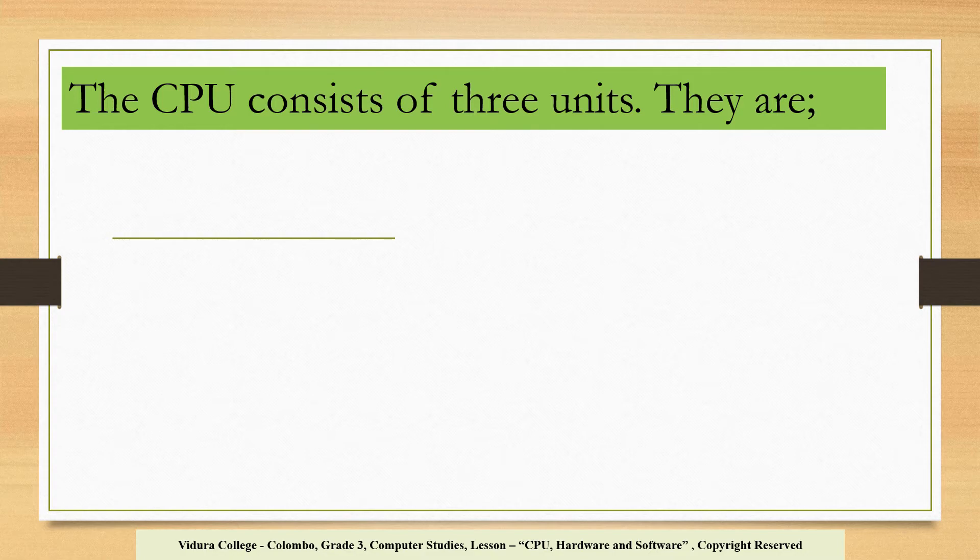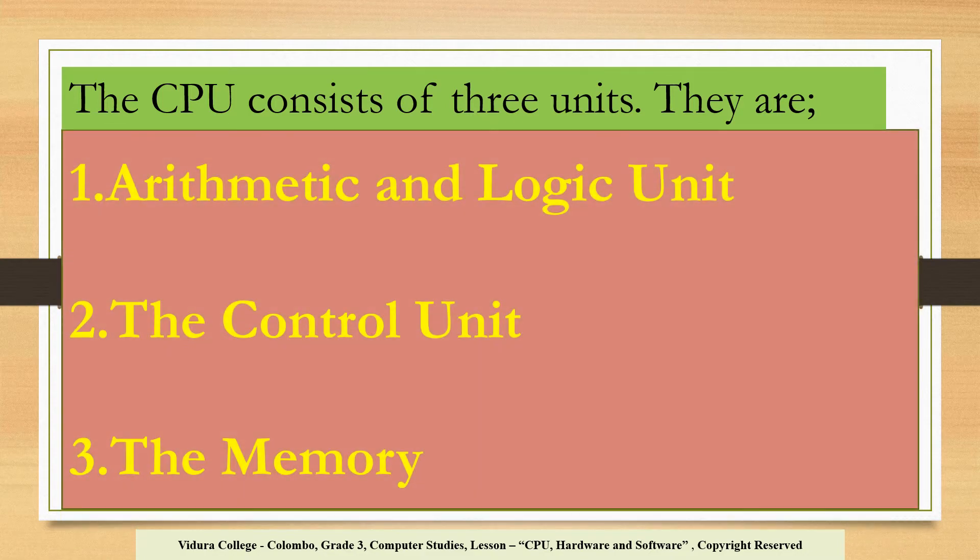Now, we are going to learn more about the CPU. Do you know, children, our brain is divided into many parts. These different parts do different functions in our brain. For example, one part of our brain helps us to do mathematical calculations. One part helps us to remember things and so on. Like that, CPU also divided into three parts. They are arithmetic and logic unit, control unit, and the memory unit.